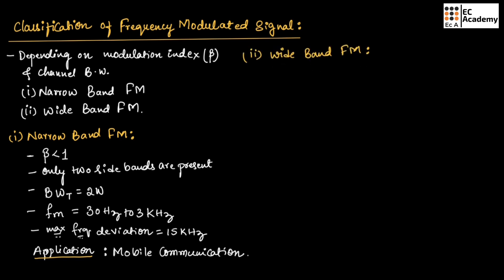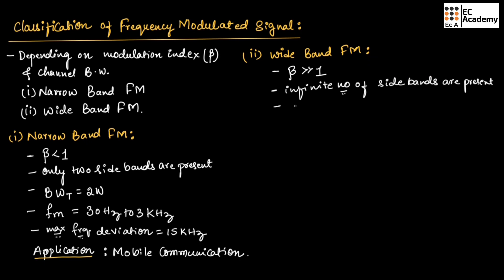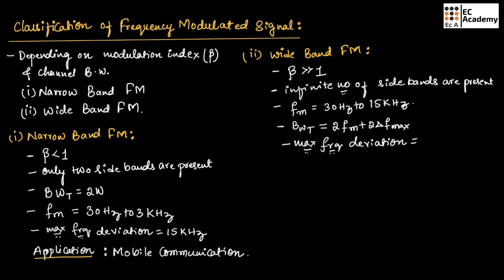Now let us understand wide band FM. In wide band FM, the modulation index beta will be greater than 1. It consists of an infinite number of side bands. The message signal frequency ranges between 30 Hz to 15 kHz. The transmission channel bandwidth can be given as 2Fm plus 2ΔF maximum. The maximum frequency deviation will be equal to 75 kHz. Wide band FM can be used in high quality music signal transmission.